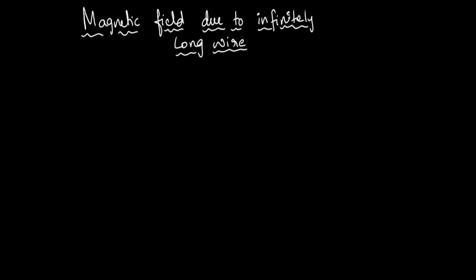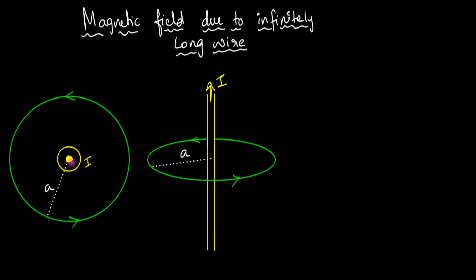So here is our wire. The wire carries a current outside the screen, and we are interested in calculating the magnetic field at some distance A. This is the top view, and this is the side view. Everything in the setup is exactly the same, but this time we're going to be using Ampere's law.